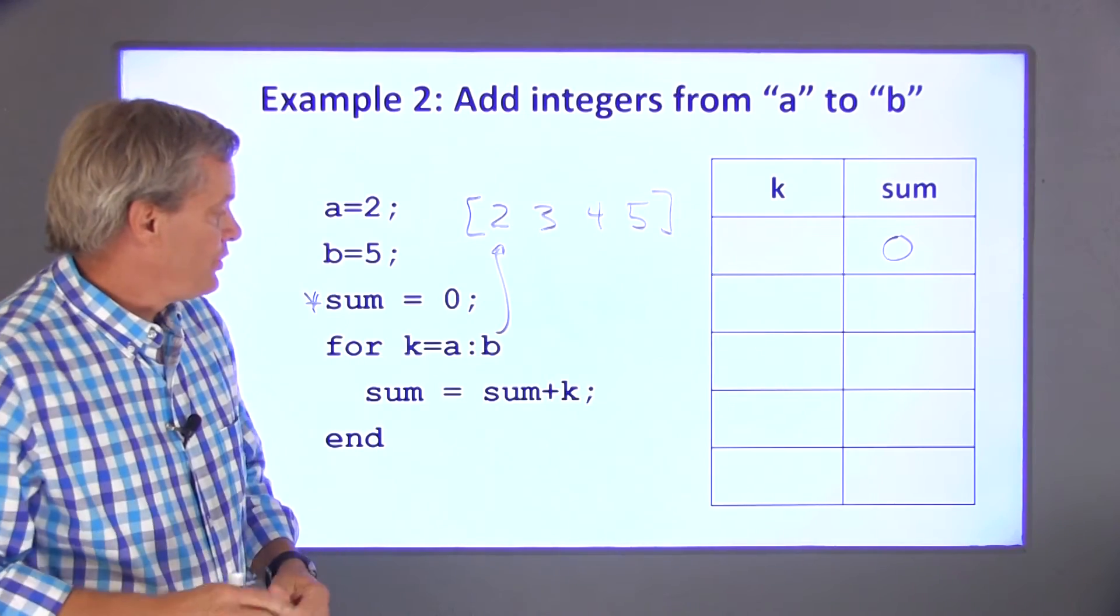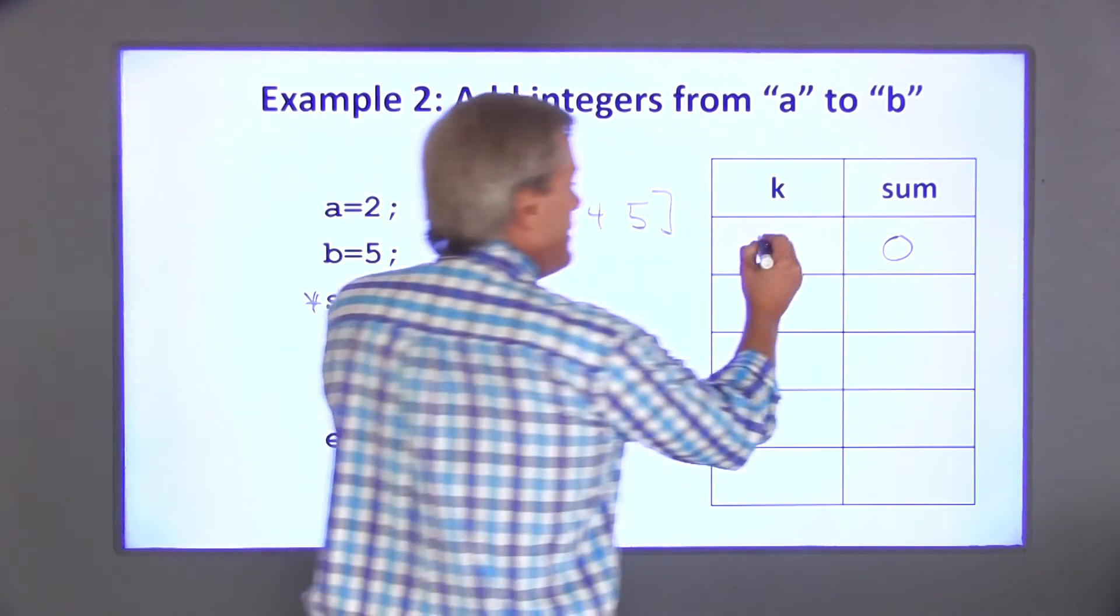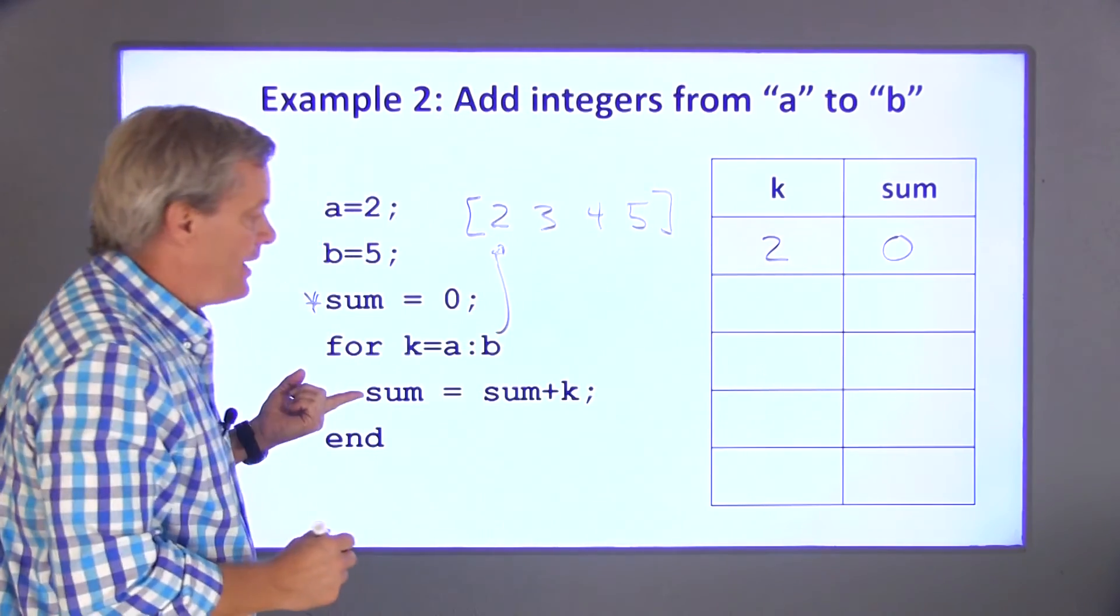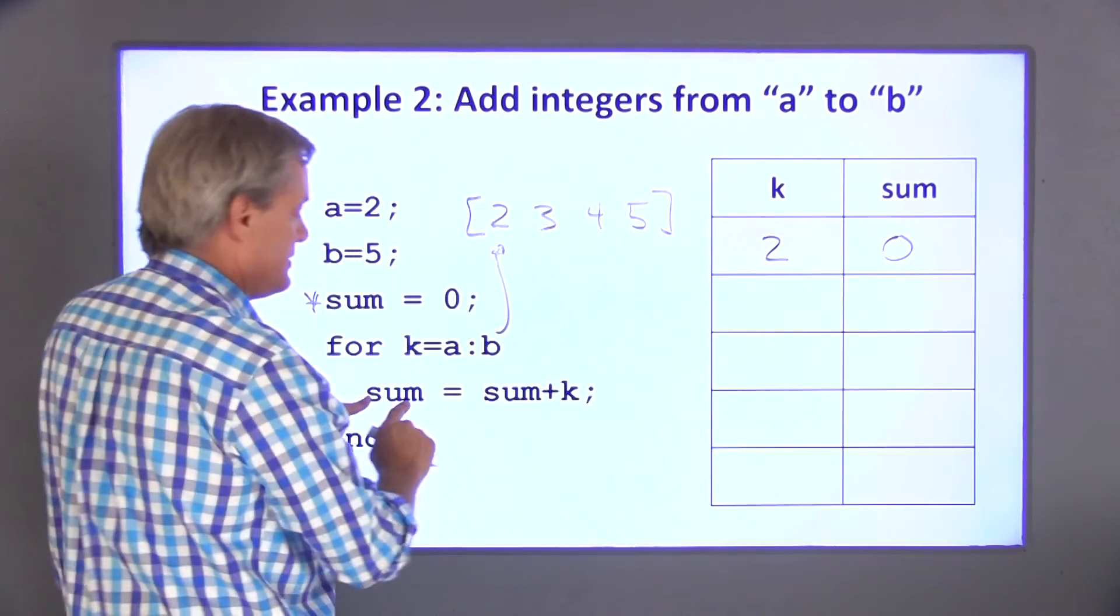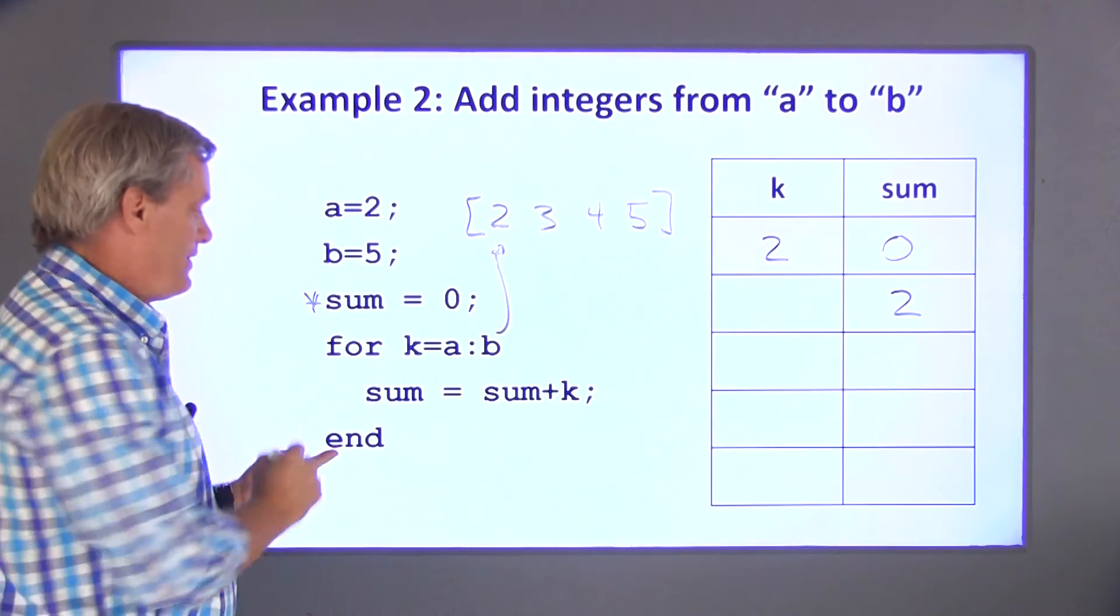The first time through the loop, k is the first element in this array. k is 2. Inside the loop, I add the values of sum and k and set that equal to sum. 0 plus 2 is 2. I hit the end statement.